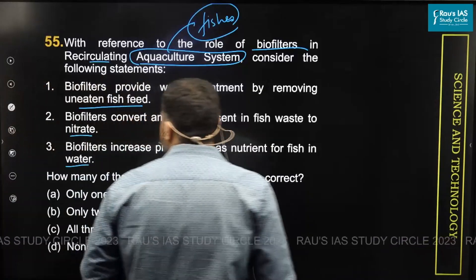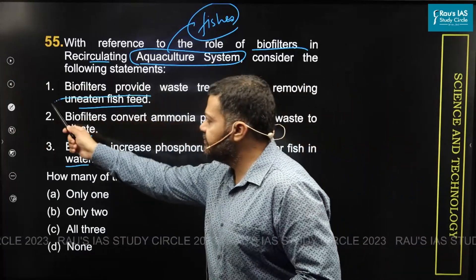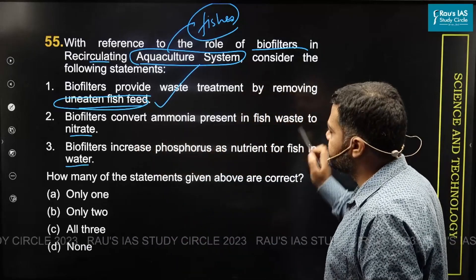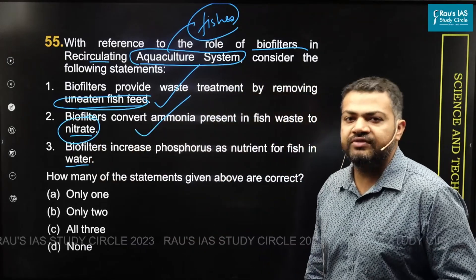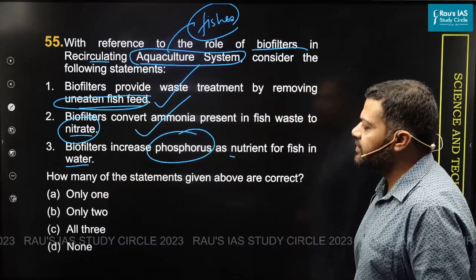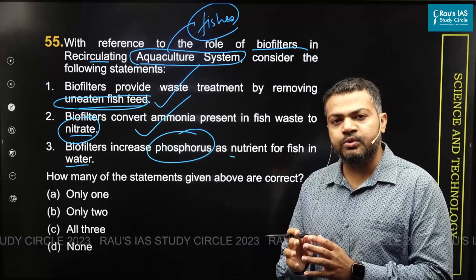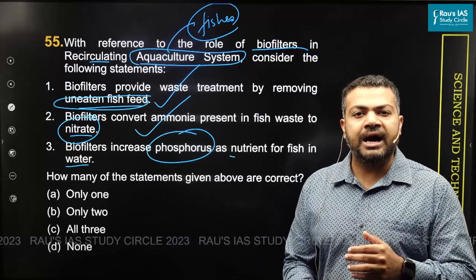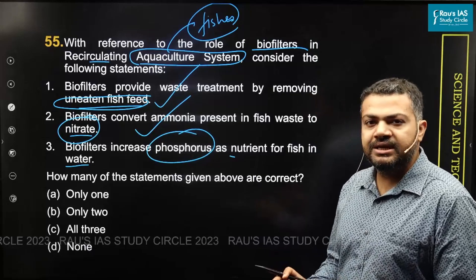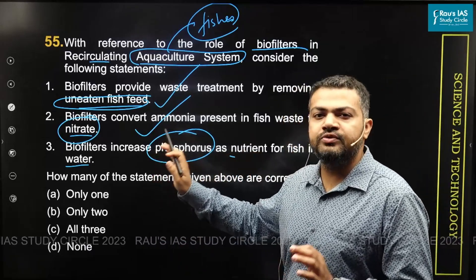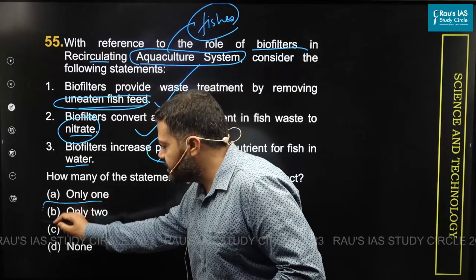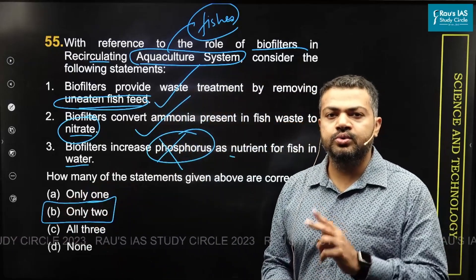Going back to the question: biofilters provide waste treatment by removing uneaten fish feed — yes, that's true. Biofilters convert ammonia present in fish waste to nitrates — yes, that is true, as these are the nitrifying bacteria. But the third statement says biofilters increase the phosphorus as nutrients for fish in water. The function of biofiltration is mostly to provide filtration, not to add nutrients into the culture tank. So this statement is incorrect. The answer to this question is most likely option B — only two options are correct.